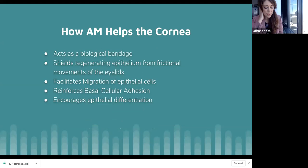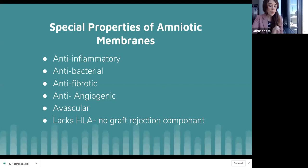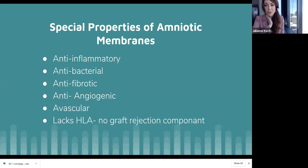The amniotic membrane acts as a biological band-aid. Just like a bandage contact lens, it shields the cornea from eyelid friction, but it works better than a standard bandage contact lens because it facilitates epithelial migration, reinforces basal cellular adhesion, and encourages epithelial differentiation. Its special properties include decreasing inflammation, decreasing risk of scarring, decreasing risk of corneal neovascularization, and amniotic membranes are avascular and lack human leukocyte antigens, which are responsible for graft rejections.